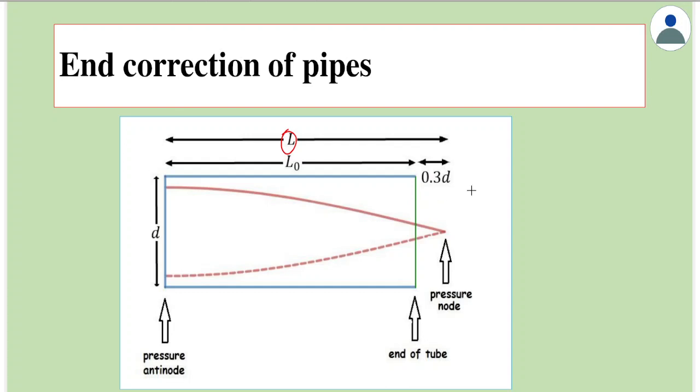What is seen theoretically is that end correction, called as small e, is given by the formula: e is equal to 0.3 into d, where d here is the diameter of this tube. In terms of radius, we can say d is equal to 2 times radius; therefore, e is equal to 0.6r. So the actual formula for frequencies in any mode would be not just l—l was the length of the tube—rather it would be l plus 0.6 into r.